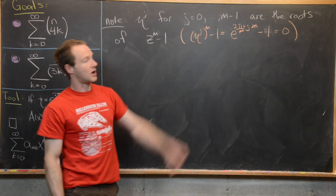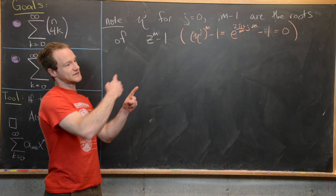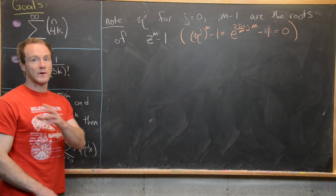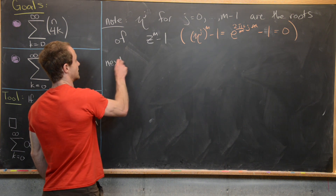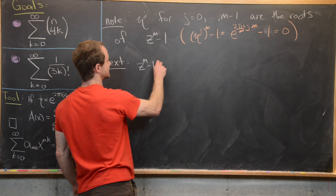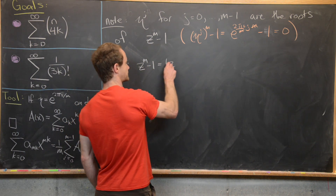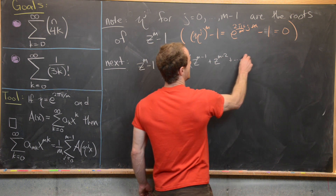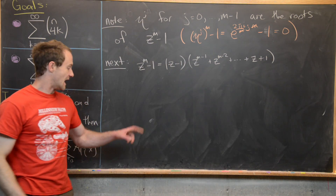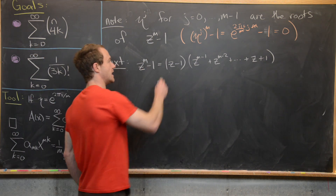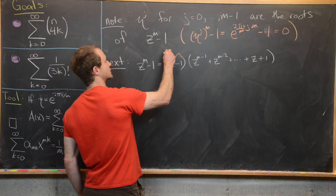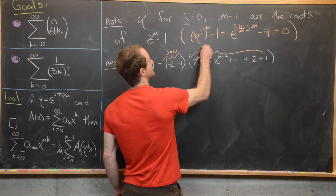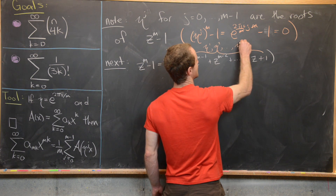Furthermore, these are all different numbers since they go around the unit circle in the complex plane, so we've found m roots to this degree-m polynomial — meaning we have all of them. Now, we can factor z minus 1 out of z^m minus 1 to get z^(m-1) + z^(m-2) + ... + z + 1. And η^0 = 1 gives the root when j = 0, while the remaining m minus 1 roots are η^1, η^2, up to η^(m-1).